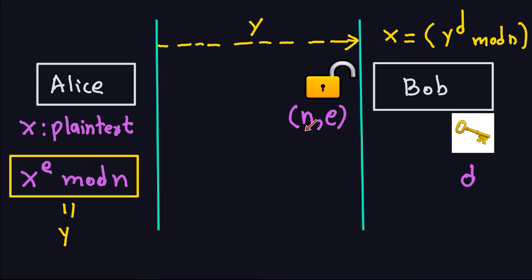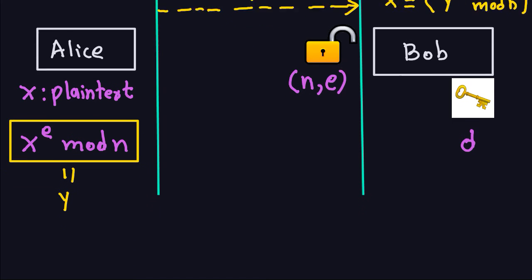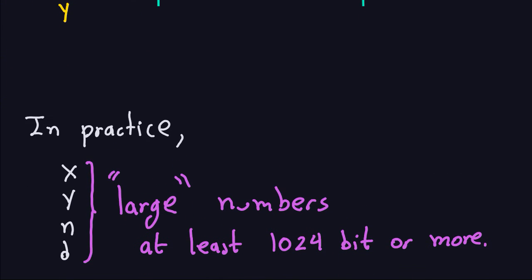As you saw last time, we have a plain text — Alice will use these numbers to encrypt it and get a number Y that is sent through the insecure channel, and Bob will take that and decrypt it with the private key D. I went a little fast here because we explained this in detail in the last video — if you don't remember, go back and watch that video. Last time we also mentioned that in practice X, Y, and D need to be large numbers.